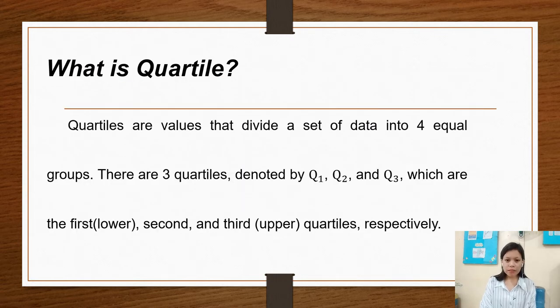So what is a quartile? Quartiles are values that divide a set of data into four equal groups. There are three quartiles denoted Q sub 1, Q sub 2, and Q sub 3, which are the first lower, second, and third or upper quartiles respectively.